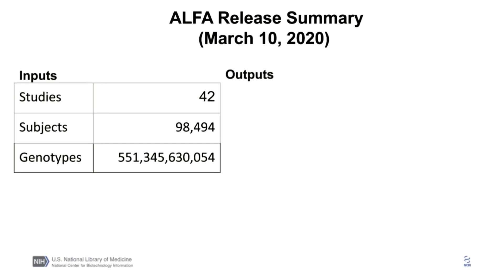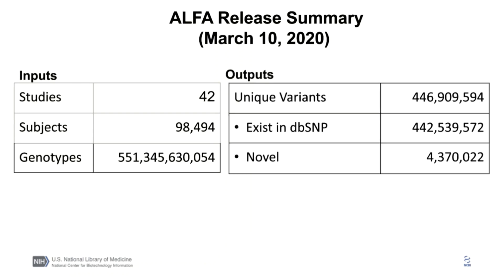Alpha's first release went public a few months ago. The input included 42 dbGaP studies and 98,000 subjects with half a trillion genotypes. Running this through the alpha pipeline resulted in almost half a billion unique variants, with 99% clustering to existing dbSNP variants and 1% novel.